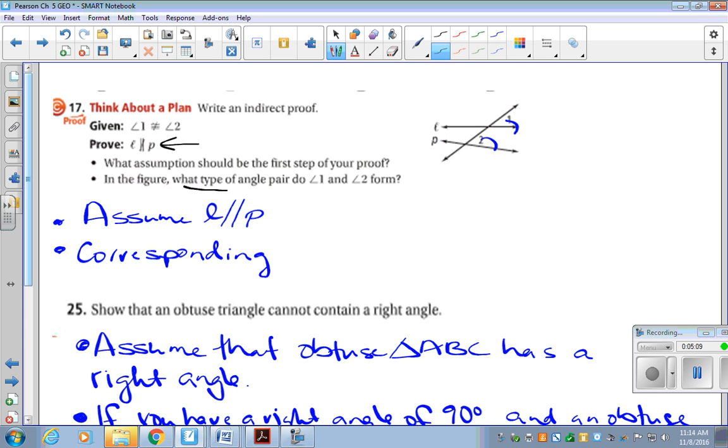In the figure, what type of angle pair do we have? Angle one and angle two are corresponding angles. And that is all the information you need for number 17.